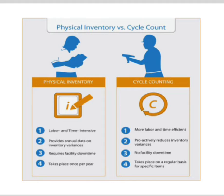Cycle counting is mostly practiced by organizations for inventory management as it is the easiest method. It is more labor and time efficient — less labor is required. You can see from the picture that a person is holding a machine to check the inventory. It proactively reduces inventory variances because on a regular basis — before shortages occur — the inventory is checked by machinery or automatically connected system software.